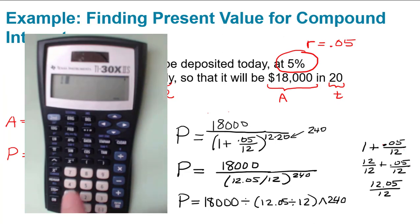So I'm going to type in 18,000 divided by parentheses 12.05 divided by 12, close parentheses, raised to the 240th power. The calculator knows that exponentiation comes before division, and it also knows that anything in the parentheses comes first. I know that the calculator will do this in the right order.